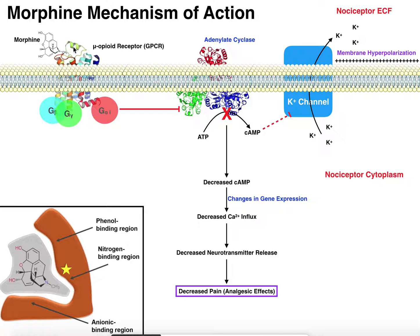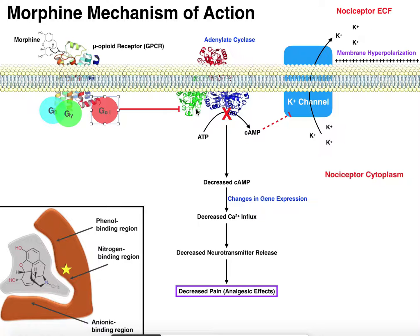When morphine binds to the mu opioid receptor, it activates the inhibitory G protein alpha subunit, which dissociates and moves over to adenylate cyclase and inhibits it. Without morphine, adenylate cyclase is producing cyclic AMP at baseline, and that cyclic AMP is inhibiting the potassium channel — so potassium is not being moved out into the extracellular fluid. With morphine present, the inhibitory G alpha protein inhibits adenylate cyclase, causing cyclic AMP levels to fall way below baseline — basically there's no cyclic AMP anymore.